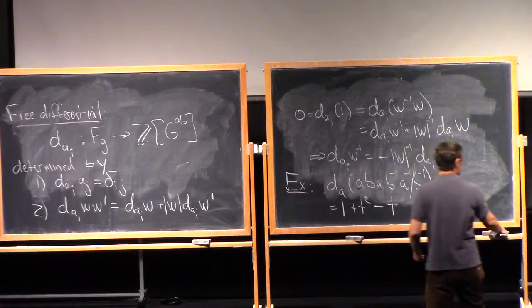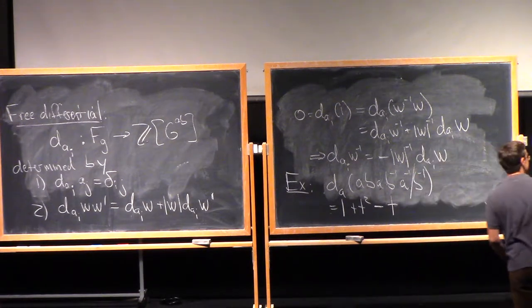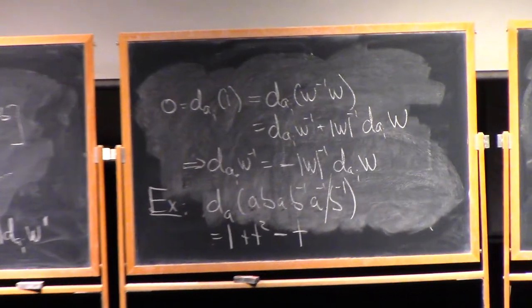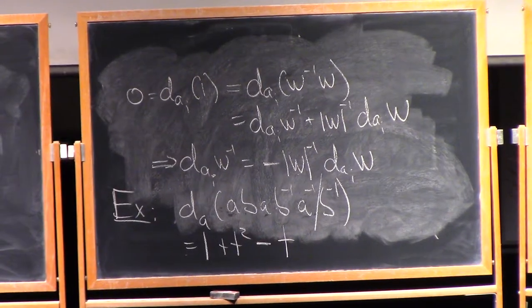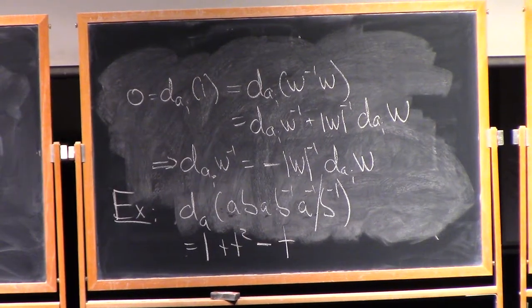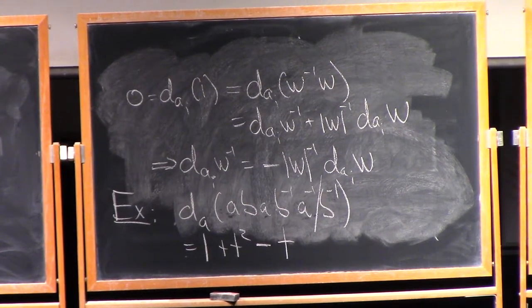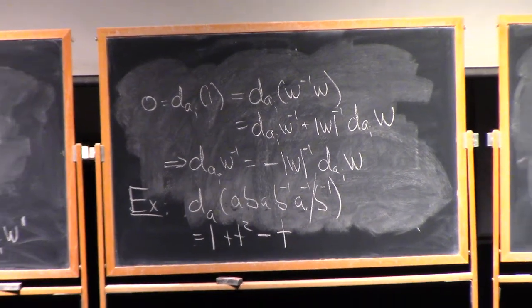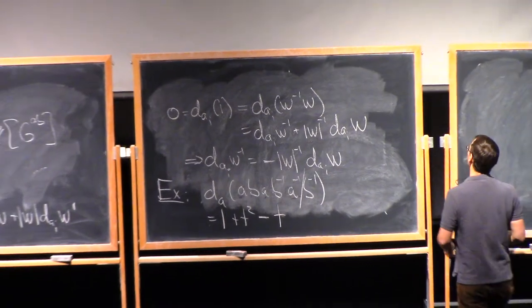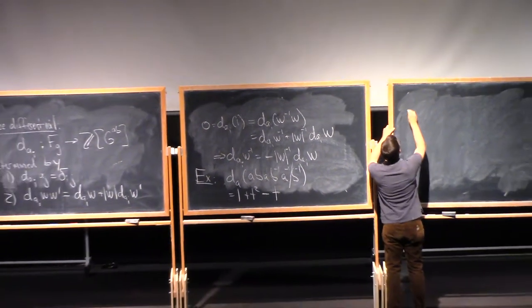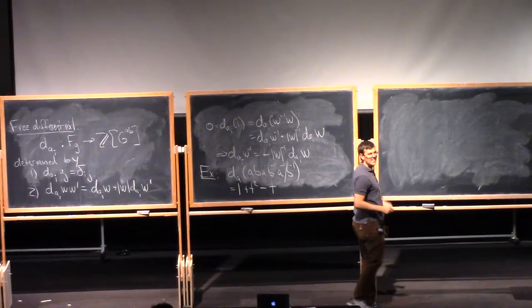It's not an accident. What this Fox derivative is doing is just computing. So, let's do the derivative with respect to B.